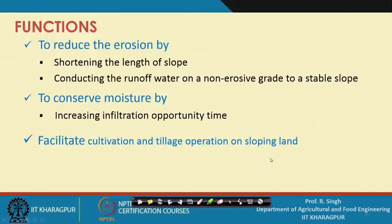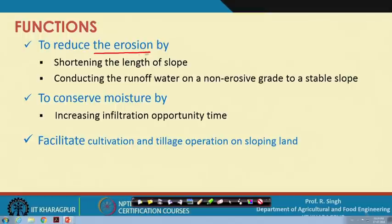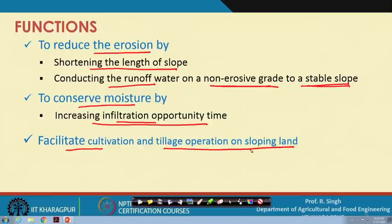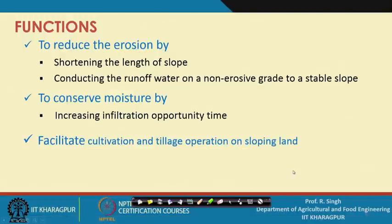The functions of terracing include: reducing erosion by shortening the slope length; conducting runoff water on a non-erosive grade to a stable outlet, or storing water if excess is present; conserving moisture by increasing infiltration time, since water is allowed to stand for a longer period; and facilitating cultivation and tillage operations on sloping lands, which is the primary objective.